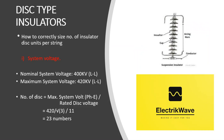Here we will calculate the number of insulator disk units per string based on system voltage. Nominal system voltage is 400 kV line to line. Maximum system voltage is 420 kV line to line. The formula: number of disks per string = maximum system voltage (phase to earth) divided by rated disk voltage. This gives a requirement of 23 disks per string.